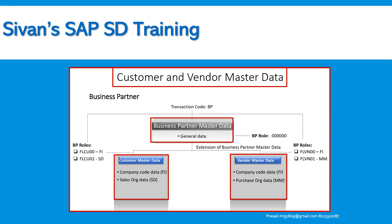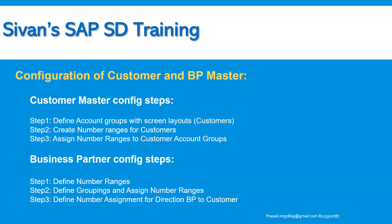Even including the credit master data — if you want to include that particular role — then while creating the business partner data, you need to include the BP role UKM000.